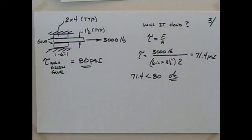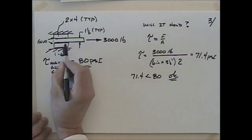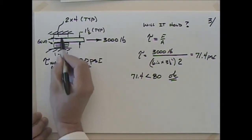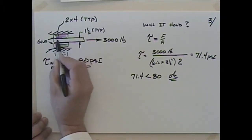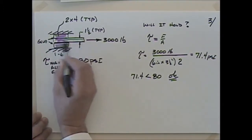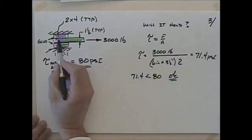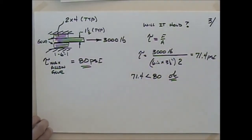The white rectangles are pieces of 2x4 with the grain going this way, put together like that. We get into this a lot when we start to build trusses. If you think about how a gusset is glued onto the side of a truss, it's a very similar situation to this.